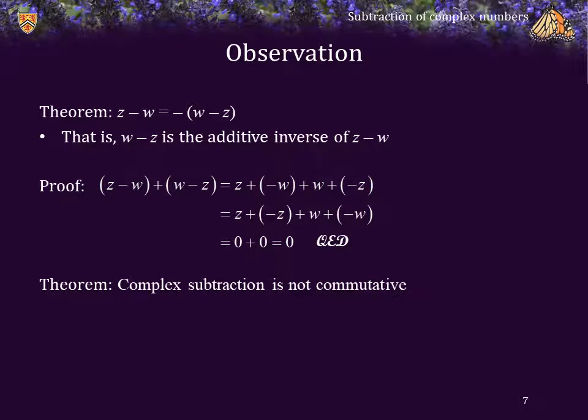A result of this is that complex subtraction is not commutative. For example, if z equals 1 and w equals j, z minus w is 1 minus j, but this is not equal to negative 1 plus j, which is the result of w minus z.